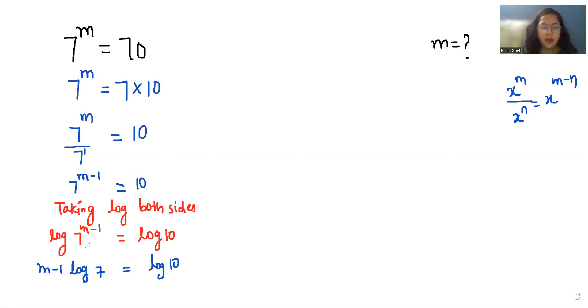Now I am going to divide with log 10 both sides. You can cancel out this, so (m-1) log₁₀7 equals 1.